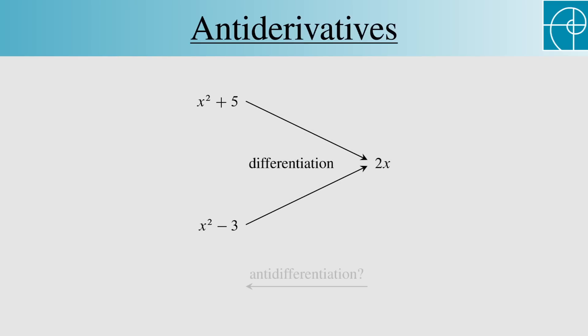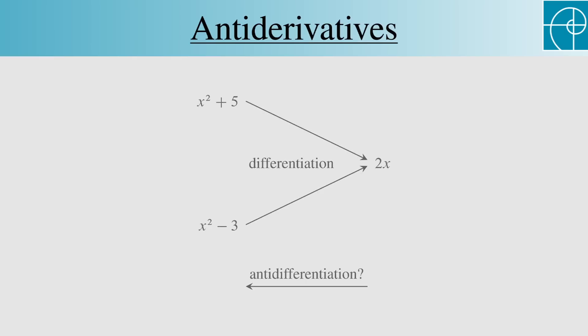But what about the other direction? If we're only given the derivative, there's no way to know the original function. We have here f and f prime, and if we shift the graph of f vertically, the derivative doesn't change.